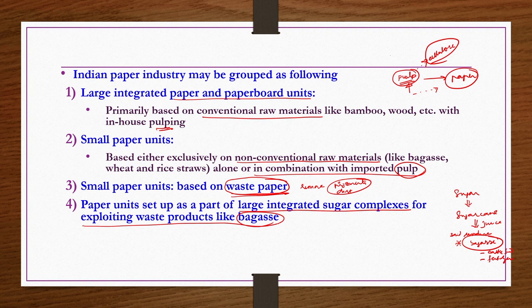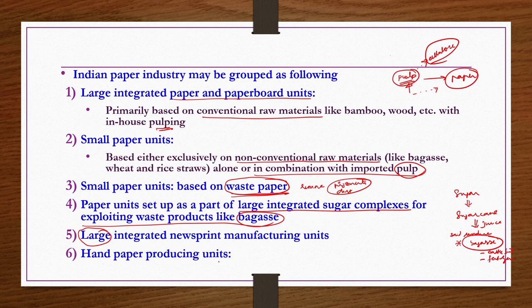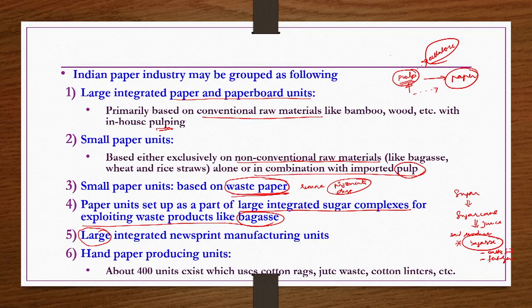Next is large integrated newsprint manufacturing units. Nowadays print media quantity is less compared to a decade or two ago, but integrated newsprint manufacturing units are still sufficiently large compared to small paper units. Next is hand paper producing units — different types of hand papers are produced for interior designing and similar applications. There are hundreds of such units which use cotton rags, jute waste, and cotton linters as raw material. This is one way of classifying Indian paper industries.